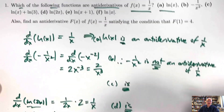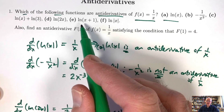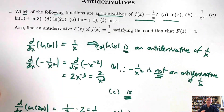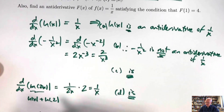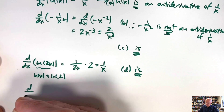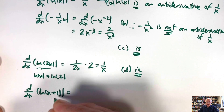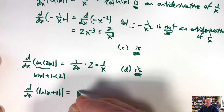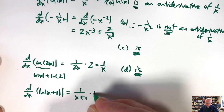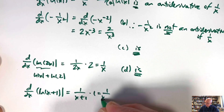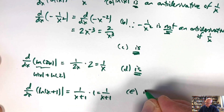What about choice E — natural log of (x+1)? That does not equal ln(x) + ln(1); that's not a property of logarithms. With the chain rule, the inside function is x+1, so you get 1/(x+1) times 1, which is 1/(x+1), not 1/x. Choice E is not an antiderivative.